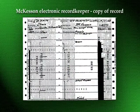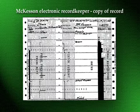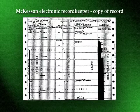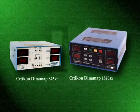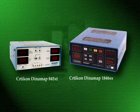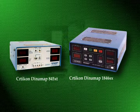McKesson developed an electronic device to aid the anesthetist in the task of record keeping. Despite Dr. McKesson's efforts, electronic means of recording data during an anesthetic did not take precedent over the handwritten chart. By the 1970s, electronic devices for recording patient variables began to appear and gain widespread acceptance.